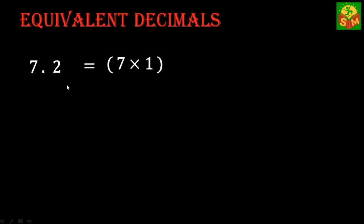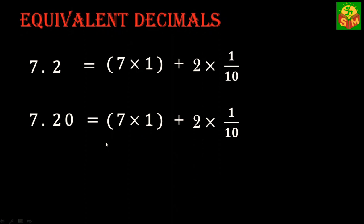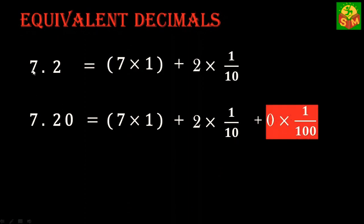Now look at 7.20. With the same approach, 7.20 can be written as 7 times 1 plus 2 times one-tenth plus 0 times one-hundredth. Any number when multiplied by 0 becomes 0, so 7.2 and 7.20 have the same numerical value: 7.2.